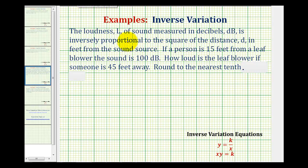Sometimes when we have an application problem like this, it's a little more challenging to determine the inverse variation equation. We need to be able to read this first sentence and determine the most important information, which in this case would be L is inversely proportional to the square of the distance d.